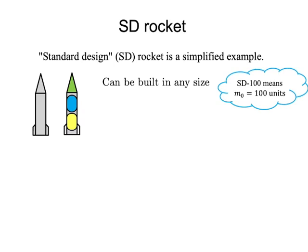The standard design rocket motor has a specific impulse of about 300 seconds, which is a pretty good specific impulse. That means the exhaust speed from the rocket motors is g times 300 seconds, which is 2,940 meters per second.